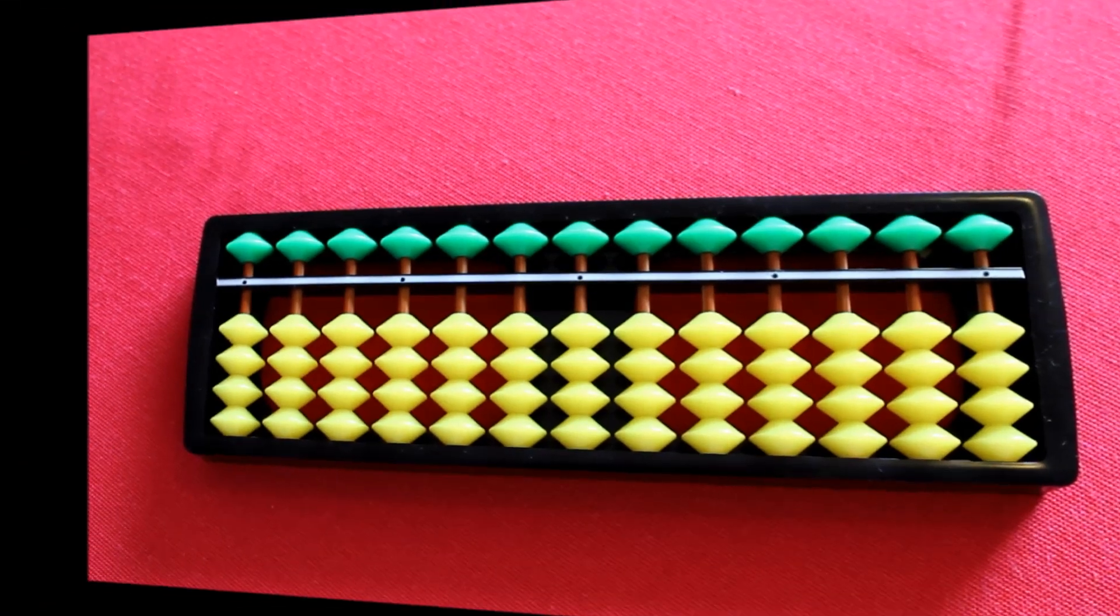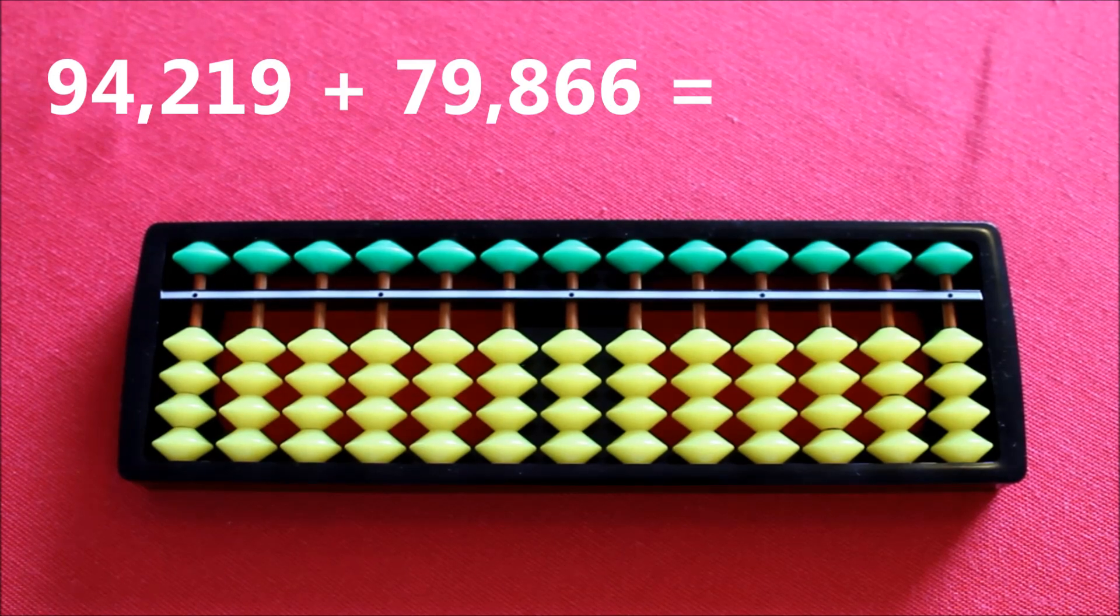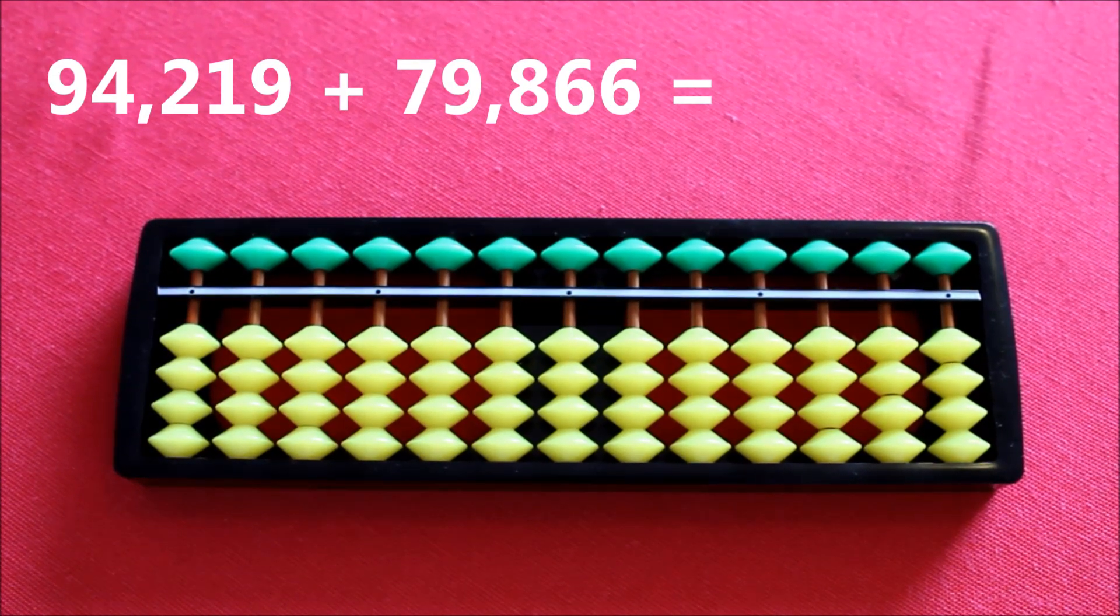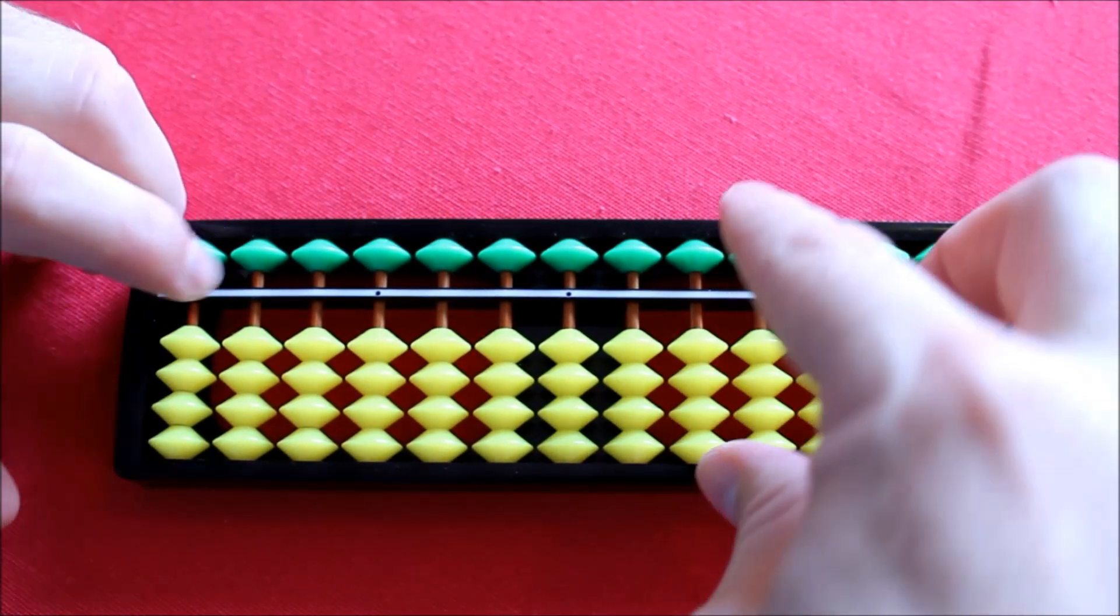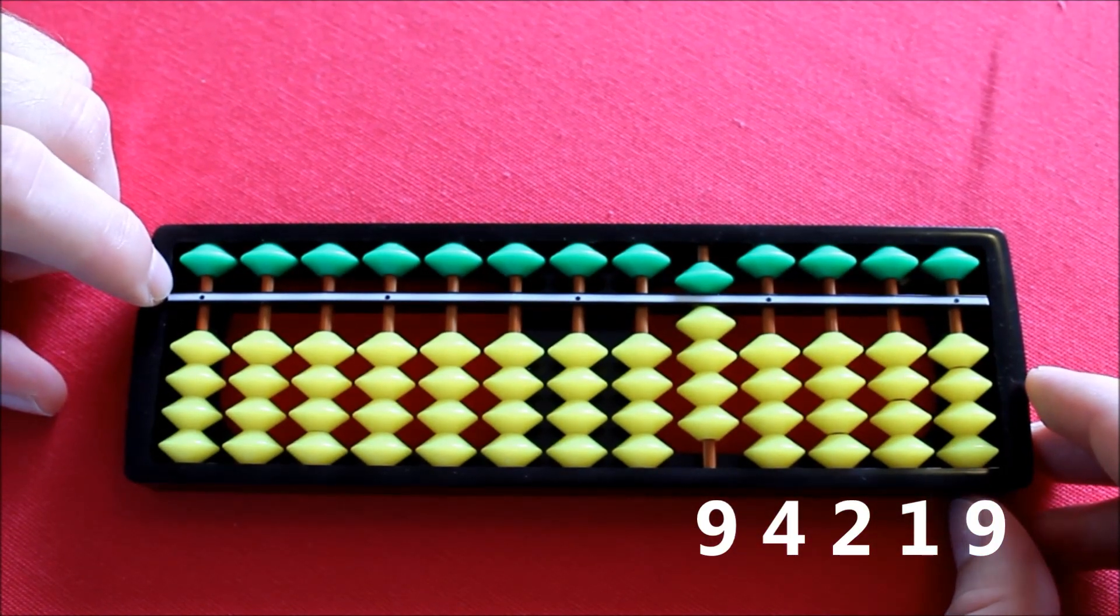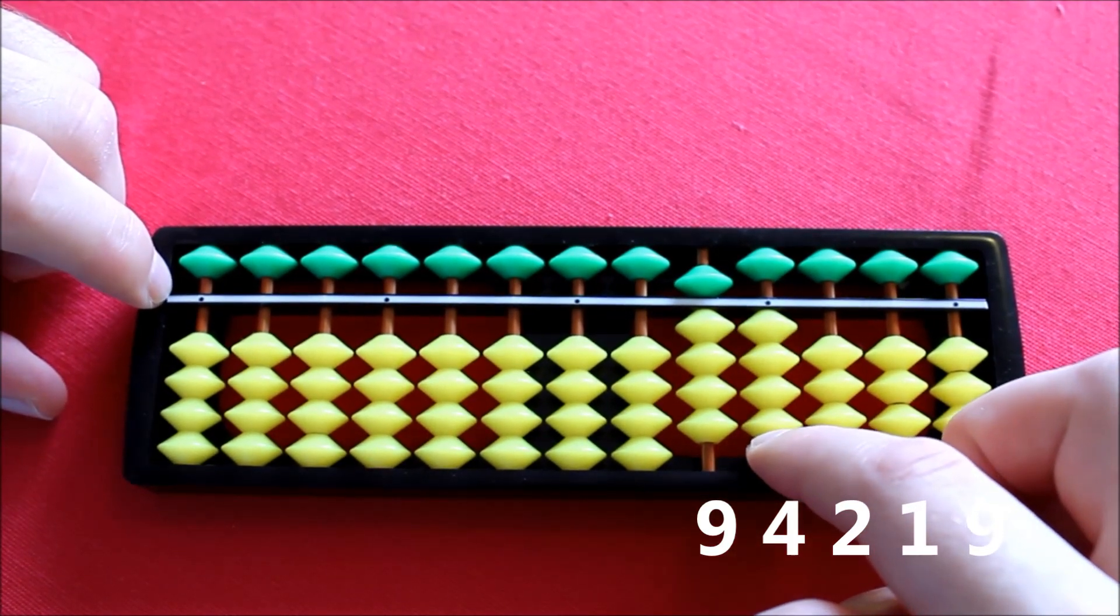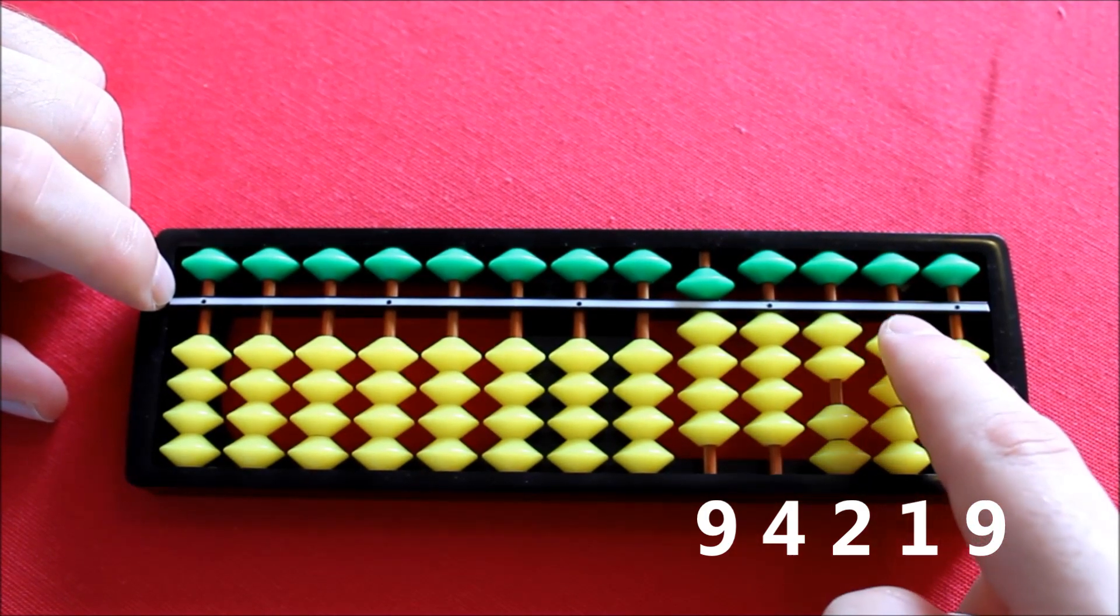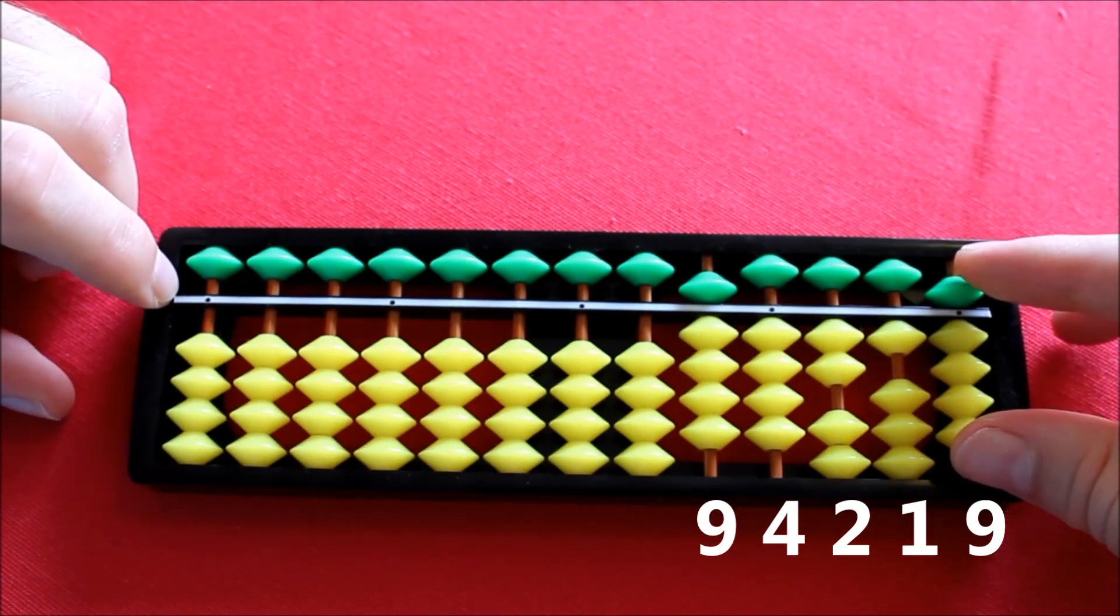All right, let's move on to do some practice. Here's the sum that I'm going to do: 94,219 plus 79,866. So firstly, we're going to be using this column here. We'll start by setting up the first number with a 9 in that first column. Into the next column, we wish to add a 4. 2 in the next column. 1 in the next column. And all of the beads will be in play for the last column. Now, let's add our number to this.